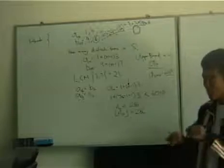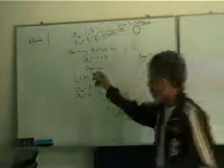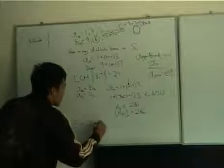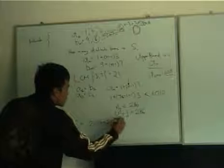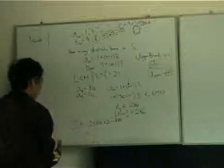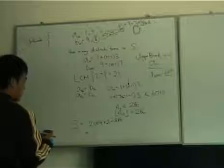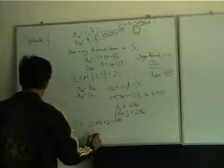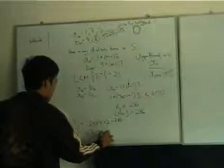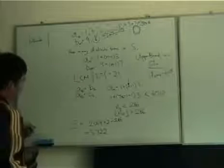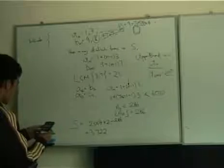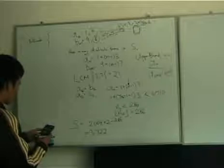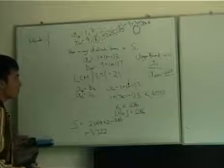So, there are 286 repeats in AN and BN. So, S will therefore equal to 2004 times 2, take away 286, which is equal to the answer of 3722. And I think that's the answer, yes — 3722, okay? So, there we go.